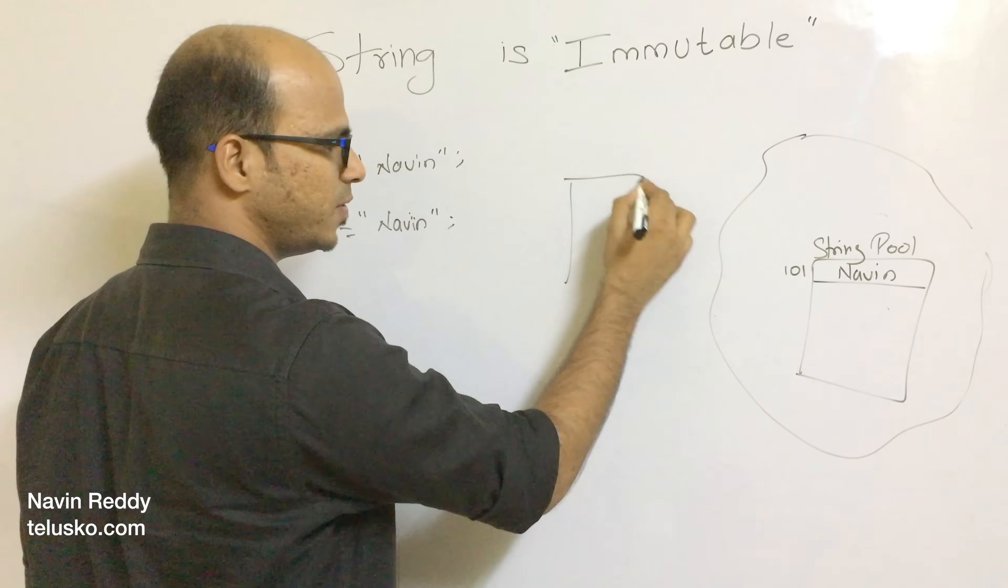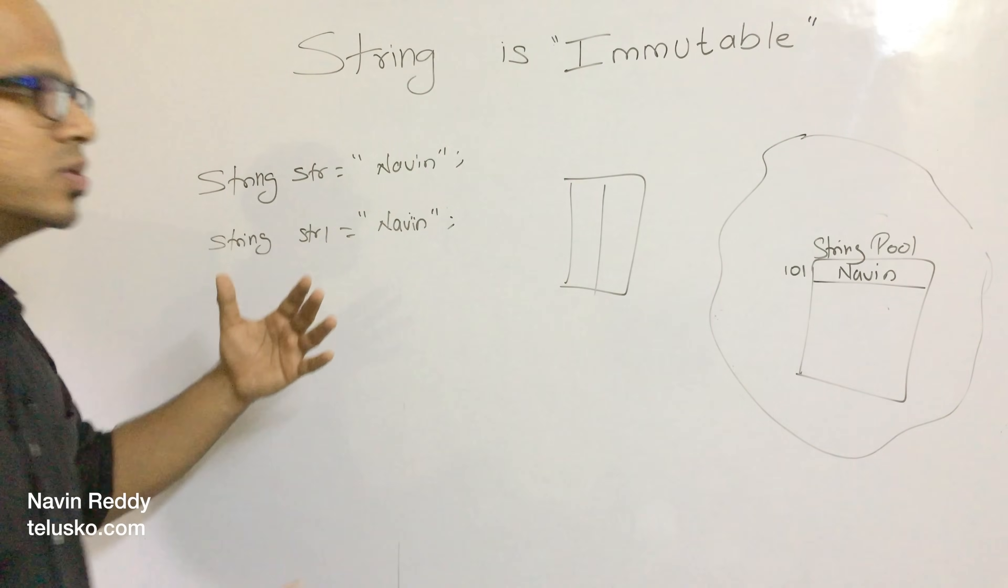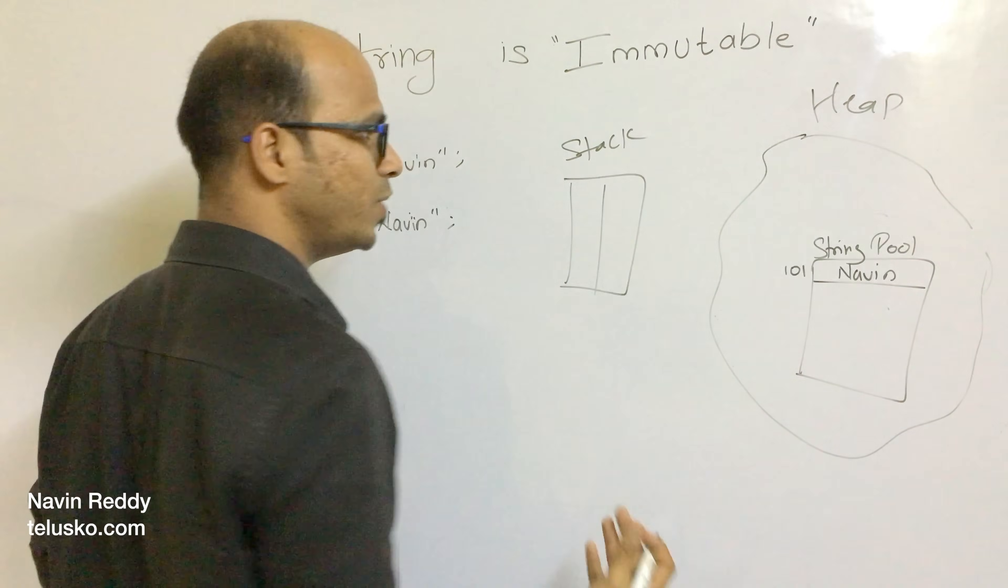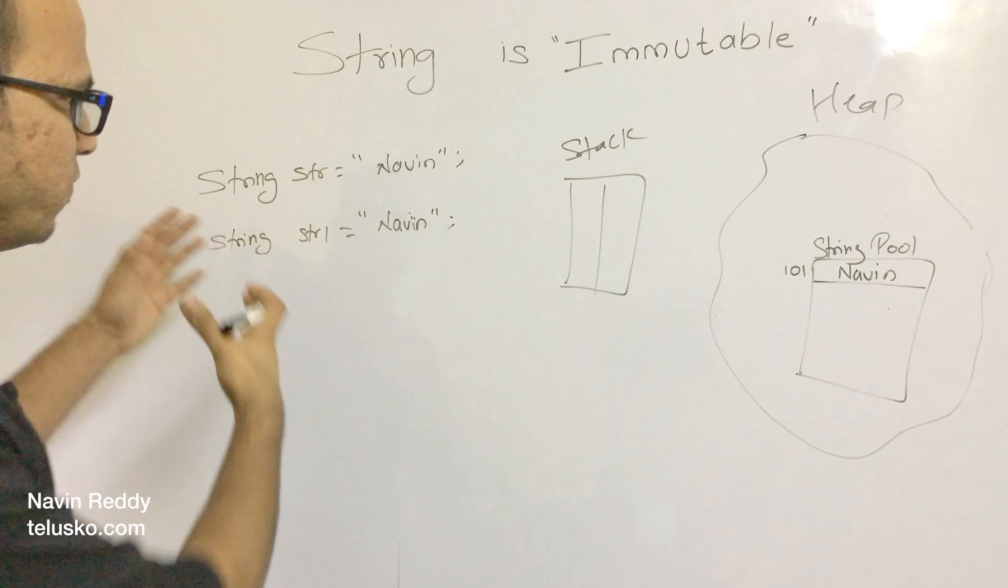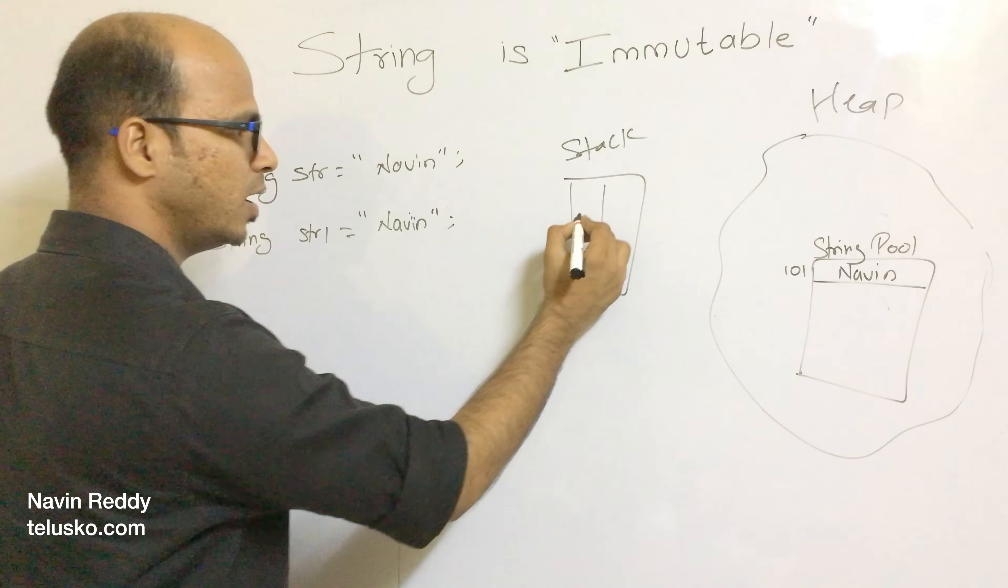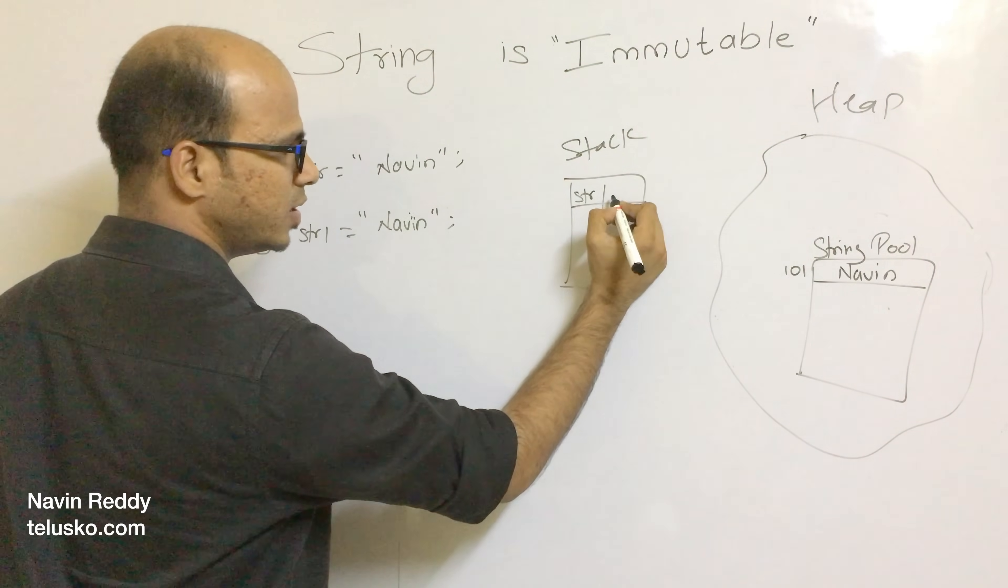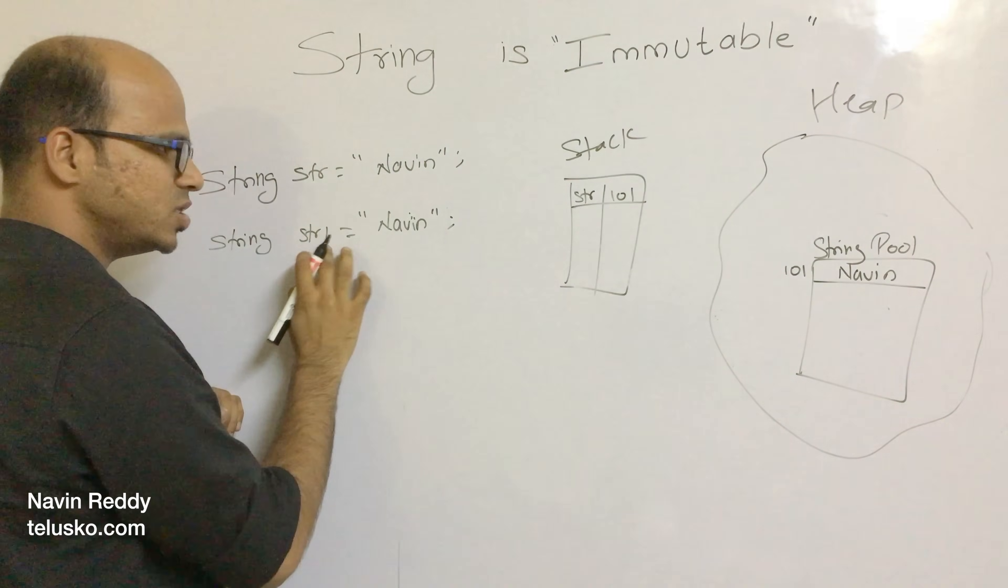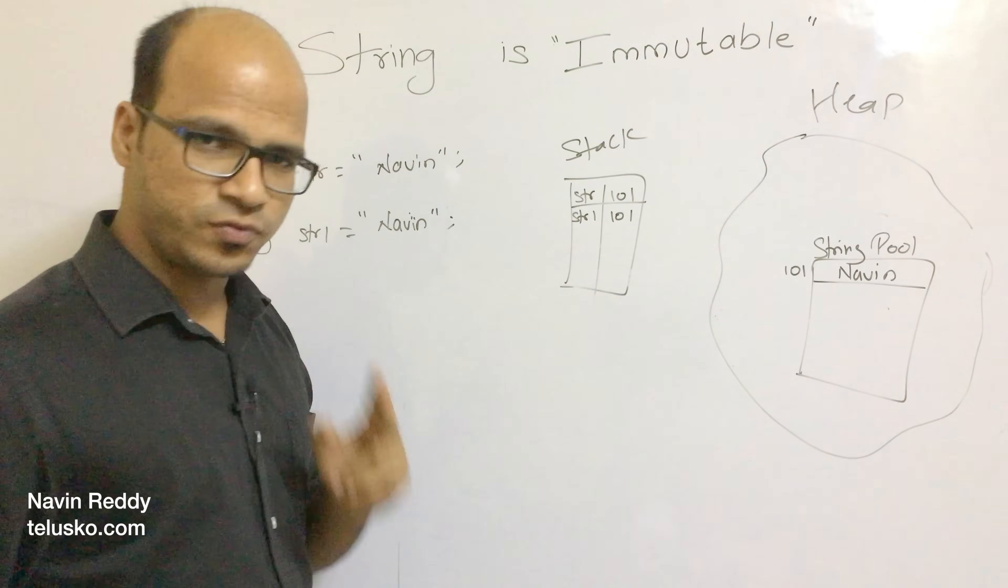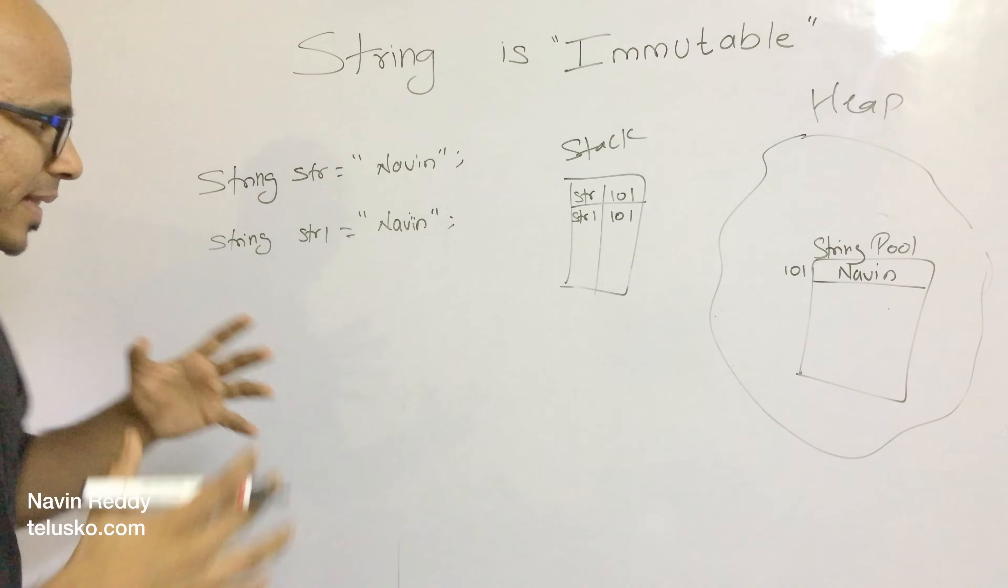There will be a stack memory. Whenever you create an object, you use two memories: stack memory and heap memory. Objects are normally created inside heap memory, and the reference - STR and STR1 - which are variables, will be inside your stack memory. You mention STR equals 101, and since STR1 is also 101, we have two variables pointing to the same object.